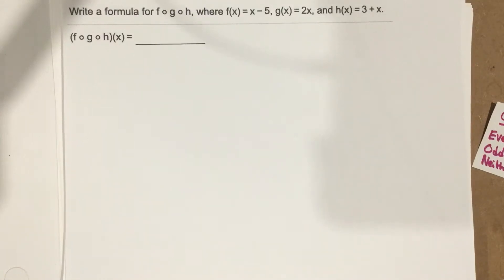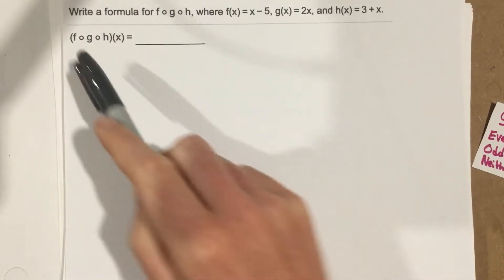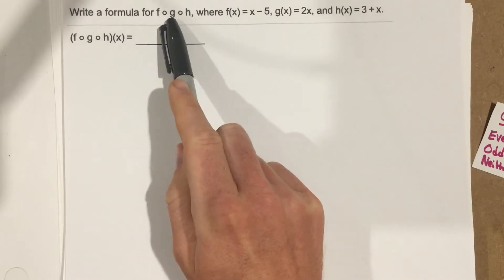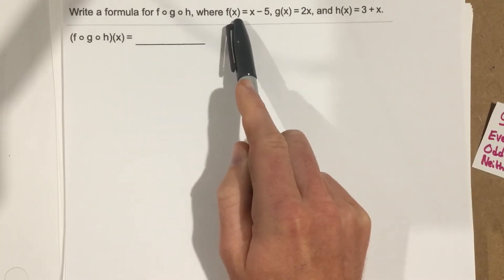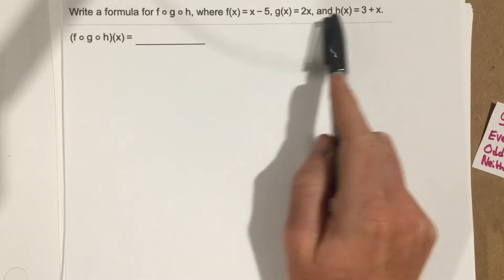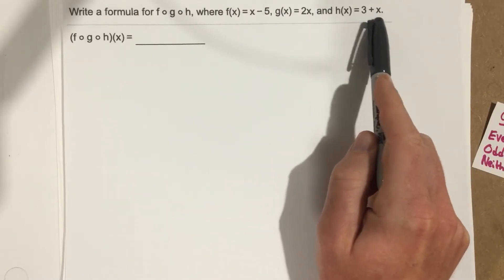This is problem number 4 from section 1.2. In this problem it says write a formula for f of g of h, where f of x equals x minus 5, g of x equals 2x, and h of x equals 3 plus x.